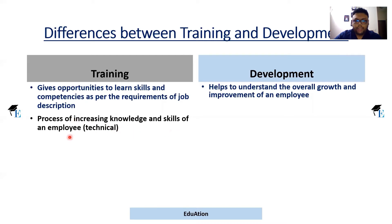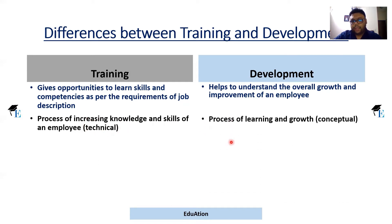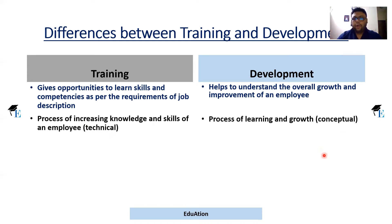Training is the process of increasing the knowledge and skills of an employee. Normally, the main task of training is to develop an employee's technical knowledge and skills related to their technical ability. Development, on the other hand, is a process of learning and growth — improving the employer's conceptual ability, thought process, and perspective. Development is a very gradual, long-term process, whereas training is short-term.